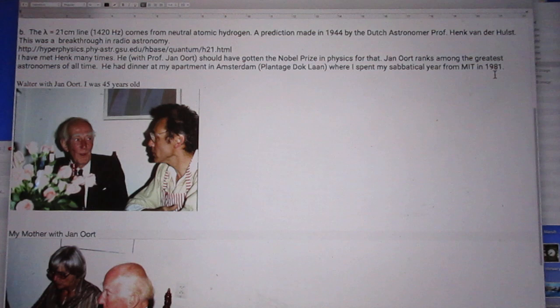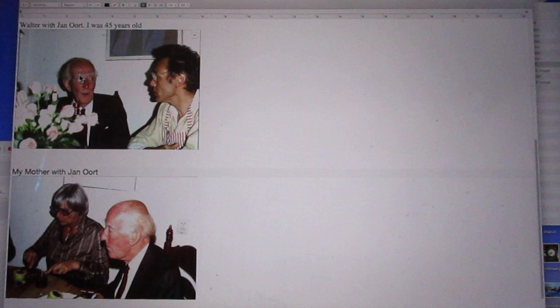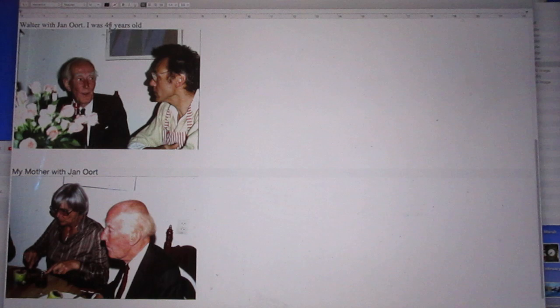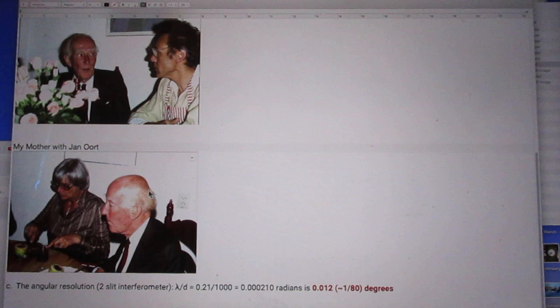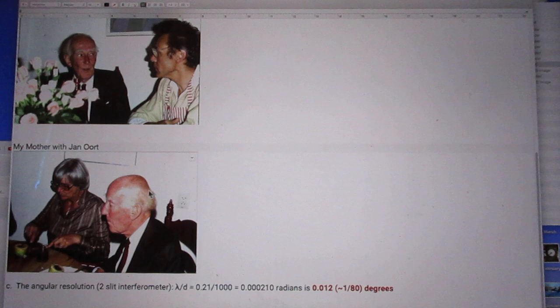So I was the whole year 1981 in the Netherlands. And what you see here is Jan Oort, and you see me, and I was 45 years old. At that same dinner, my mother was there, Jan Oort and my mother.